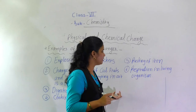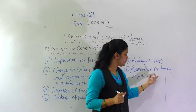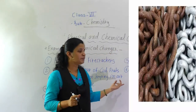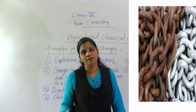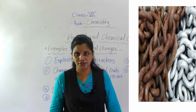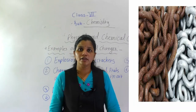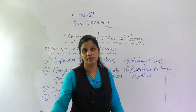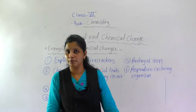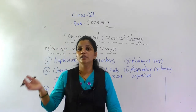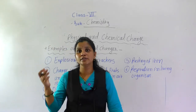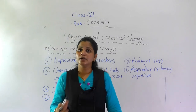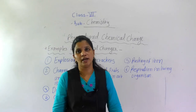Other examples are rusting of iron and respiration in living organisms — these are also examples of chemical changes. We will see rusting of iron in detail in the next point, including how it occurs and what the essential conditions are. That we will learn in the next lecture.